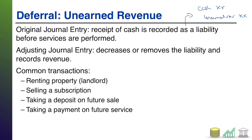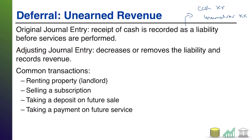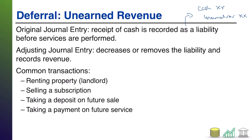Once you have performed the service, then you get to record what we call the adjusting journal entry. The adjusting journal entry either decreases, if done in part, or removes, if done in full, the liability, and records the actual revenue.